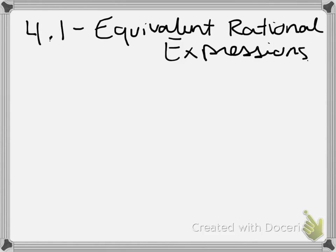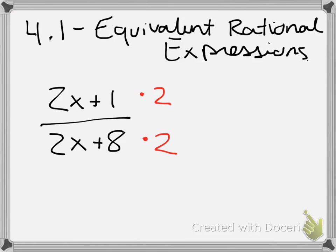An equivalent rational expression is any expression that's been multiplied or divided in the numerator and the denominator. For example, if I had a rational expression like 2x plus 1 over 2x plus 8, and I was looking for an equivalent rational expression, that's anything that's multiplied or divided by the top and the bottom. Let's do something nice and easy. We'll multiply everything by 2.